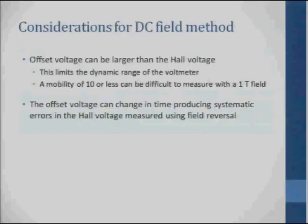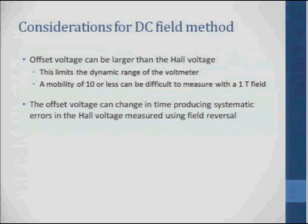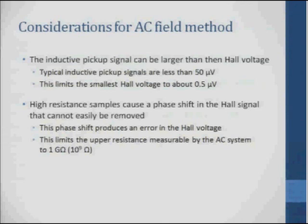To wrap up and review: with the DC field method, offset voltages can be much larger than the Hall voltage, which limits the dynamic range of the voltmeter. Practically, a mobility of 10 or less can be difficult to measure with fields up to one Tesla. Increasing the current in a DC measurement increases both the misalignment voltage and the Hall voltage proportionally, so it doesn't really buy you more dynamic range on the voltmeter. The misalignment voltage can also change in time, producing systematic errors in the Hall voltage when using field reversal. For the AC method, ultimately the inductive pickup is going to limit your sensitivity, so you want to keep that as small as you can.